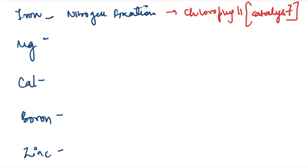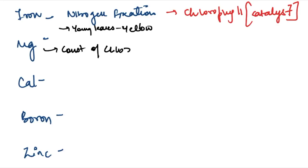Because iron works as a catalyst for chlorophyll, its deficiency causes young leaves to turn yellow. Next is magnesium — it is the most essential constituent of chlorophyll. The key distinction: iron is the catalyst of chlorophyll, while magnesium is the constituent of chlorophyll.